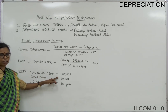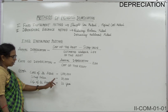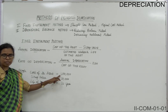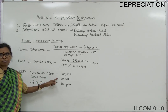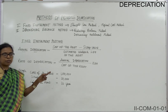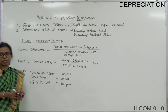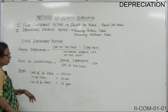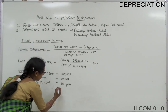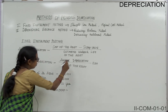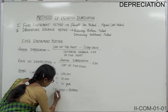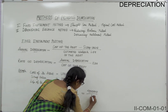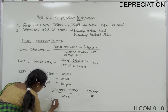Let's take an example. The cost of the asset is 1 lakh, scrap value is 10,000, and life of the asset is 10 years. Cost of the asset is the amount paid at the time of acquiring the asset. Scrap value is the residual value — the estimated sale value of the asset after its working life. Applying the formula: annual depreciation equals 1,00,000 minus 10,000 divided by 10, which gives 90,000 divided by 10 equals 9,000.